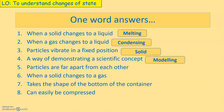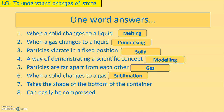Number five: particles are far apart from each other — what is that called? The answer is gas. The fact that they are far apart from each other — that's a gas. Number six: when a solid changes to a gas, what do we call that?